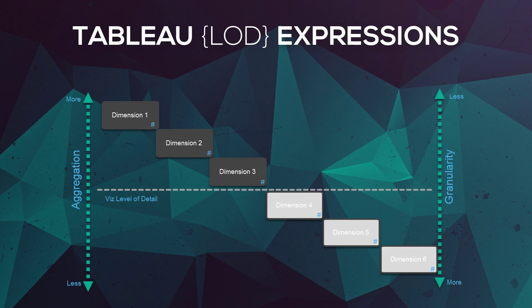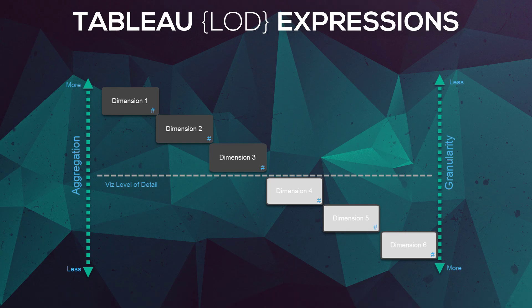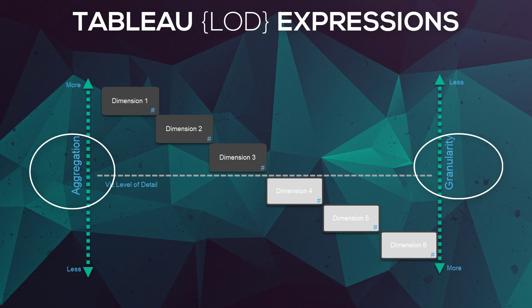So let's talk about what an actual LOD expression is. The LOD expression allows you to compute aggregations that are not at the level of detail that your visualization is. Let me explain that. Let's say we have three different dimensions on our visualization — dimension one, two, and three. Our visualization is going to aggregate up by the combination of those dimensions. So if we have category, subcategory, and product name, it's going to sum by that combination. That is the level of detail in our visualization, made up of aggregation and granularity — and aggregation is the opposite of granularity.